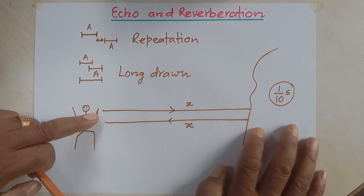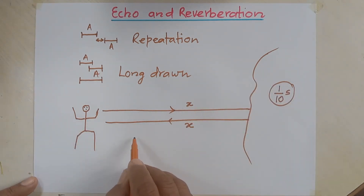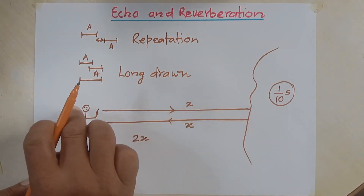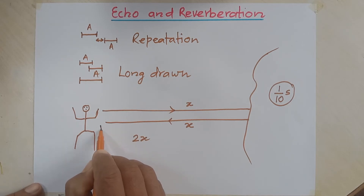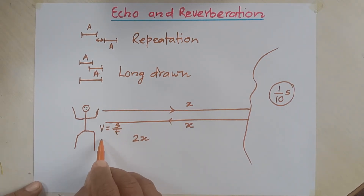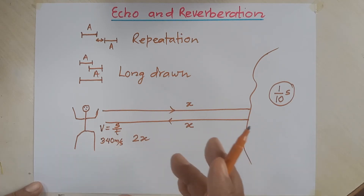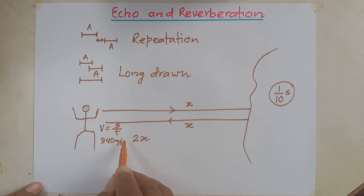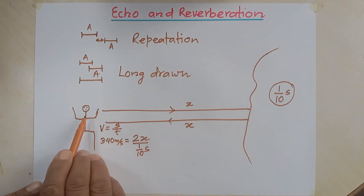Let's say the distance between this person and the reflecting surface is X. Then the sound has to cover a distance of 2x to return back to his ear. We know that velocity equals distance divided by time. The distance is 2x, and we know the velocity of sound — on average it is 340 meters per second. At 0°C it is 332 m/s, but at normal temperature of 10–20°C we take 340 m/s as the average.